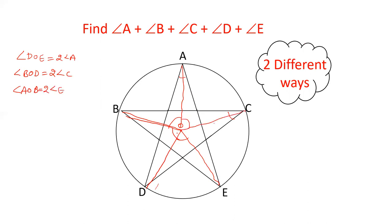Angle AOC equals twice angle D. And angle COE equals twice angle B.